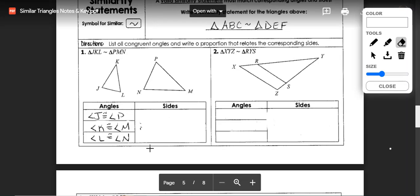When we're writing a proportion relating the sides we want to write the proportional sides as a fraction. We have JK which corresponds with PM by the diagram and by the corresponding parts in our similarity statement. We can say that that is going to be equal to the ratio of KL to MN which would be equal to the ratio of JL and PN.